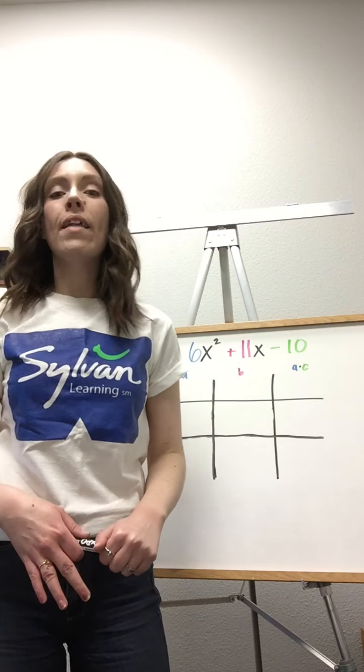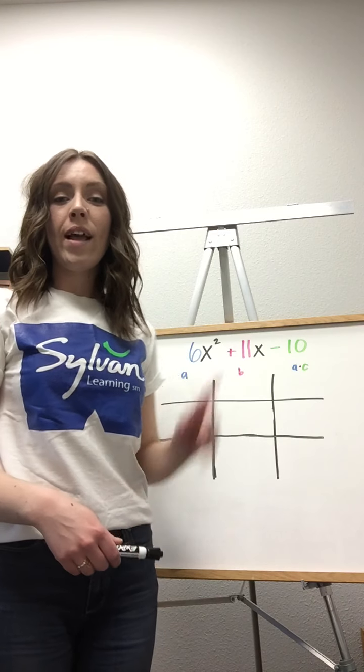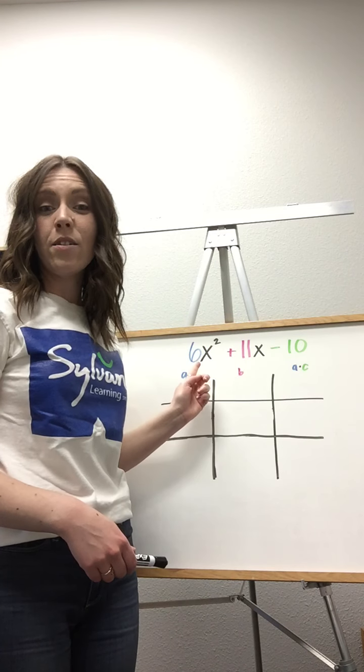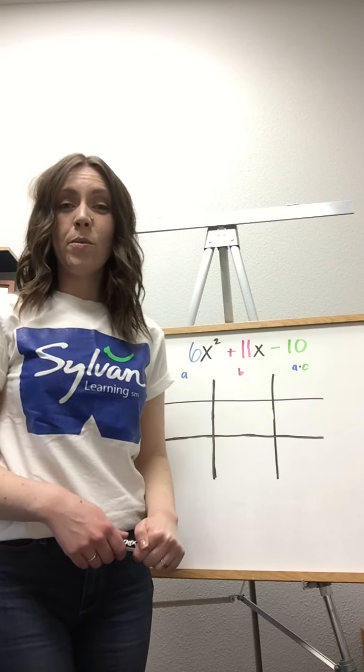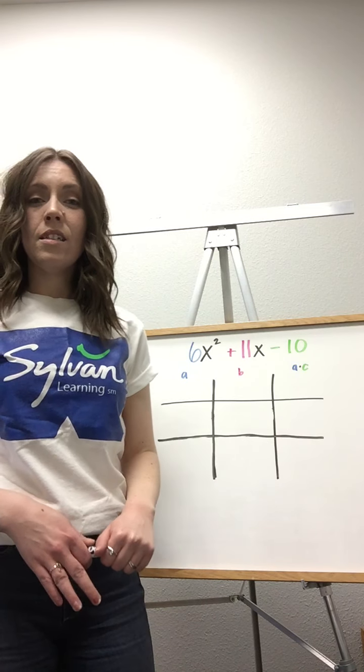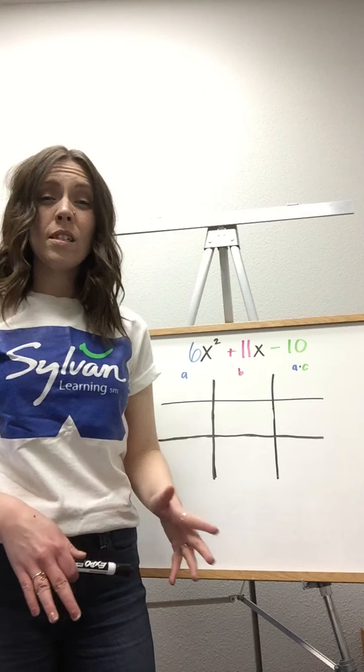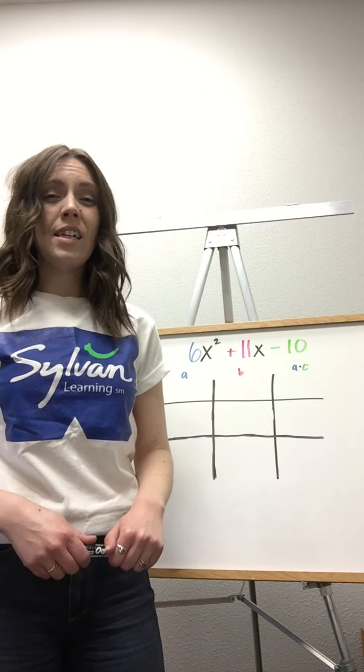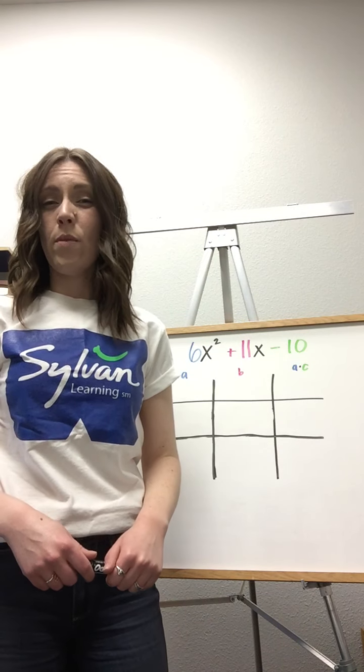Now, there are multiple methods for factoring quadratic equations, but when there is a leading coefficient, or a number right in front of the x squared, things can get a little bit more complicated. So this is a great way to use a systematic approach rather than having to guess and check multiple times throughout the process.